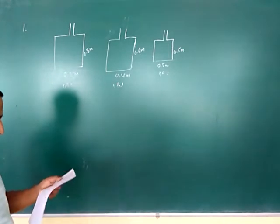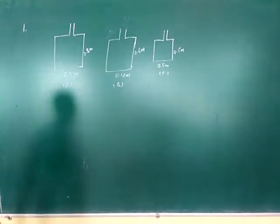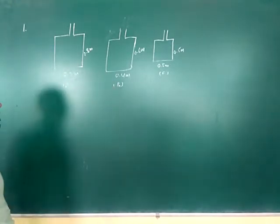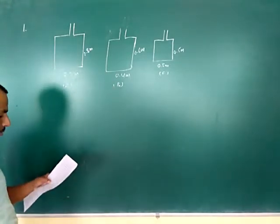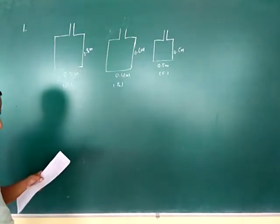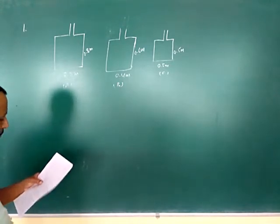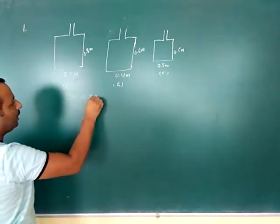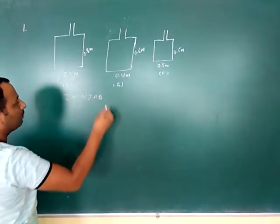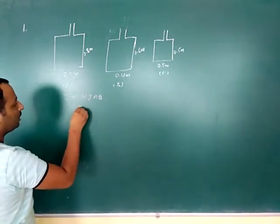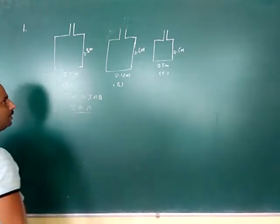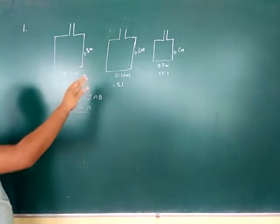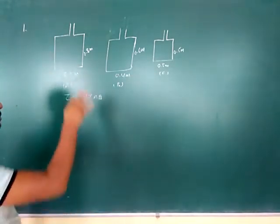Now we have to tell in which case the torque will be maximum. This is a current flow. I know what torque is: N I A B. Maximum torque. Torque is directly proportional to area, perpendicular. This is the question. Perpendicular magnetic field.